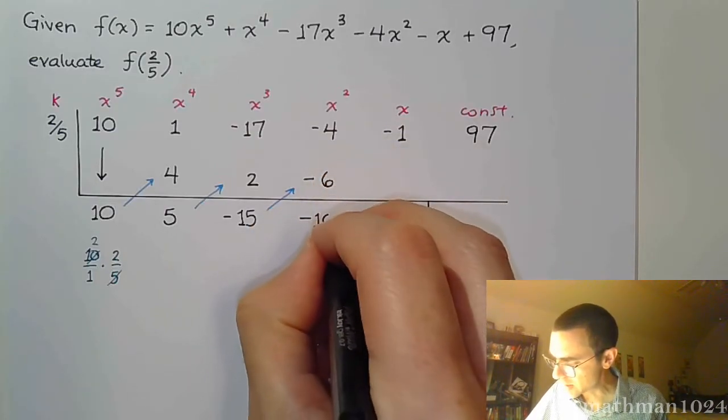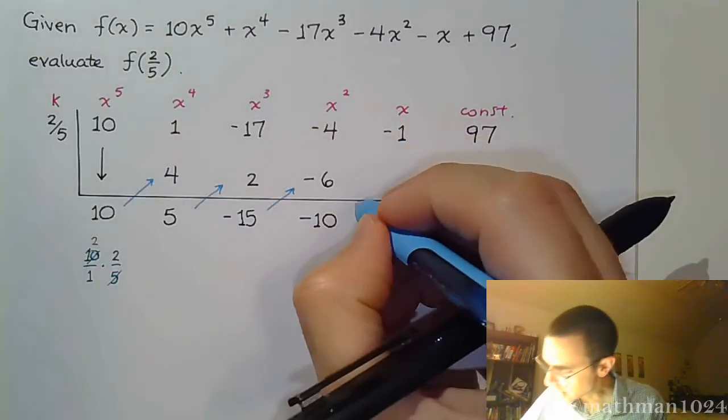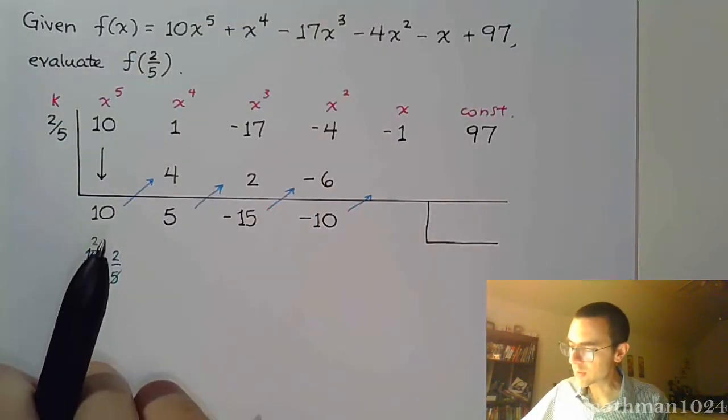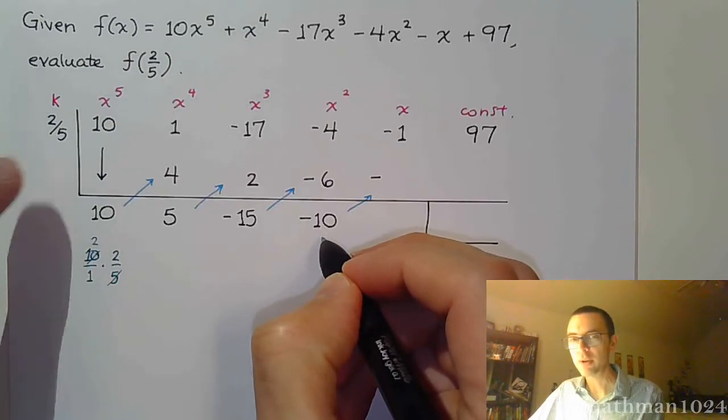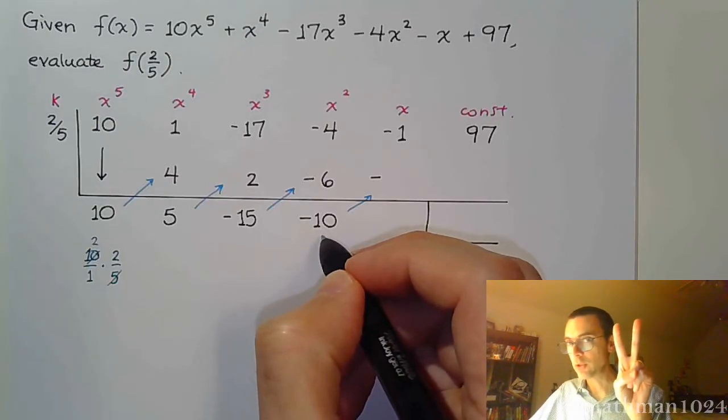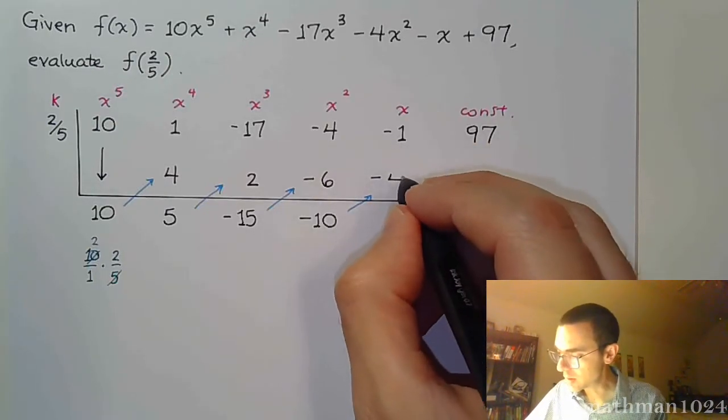And we get negative 10. Positive 2 over 5 times negative is going to give me a negative number. 10 divided by 5 is 2. 2 times the numerator of 2 gives me 4.